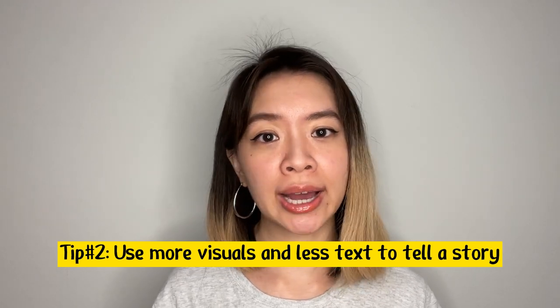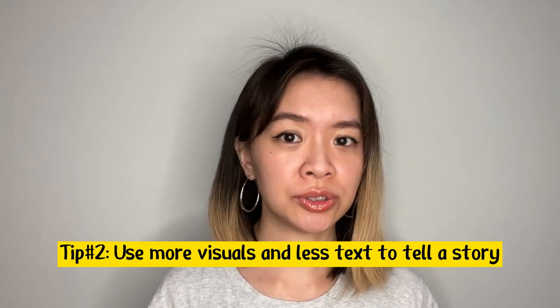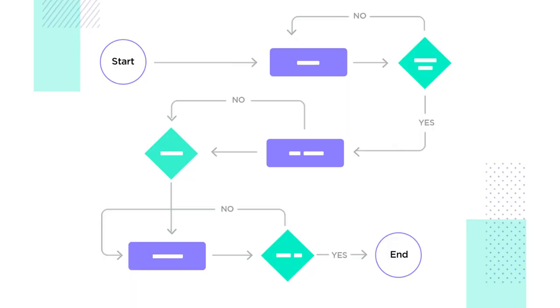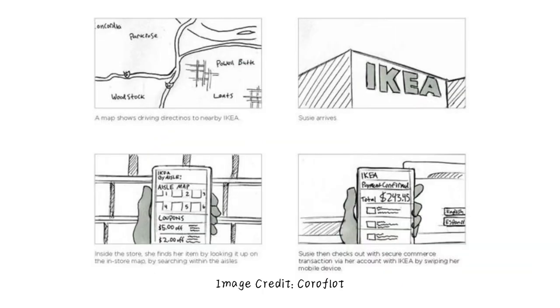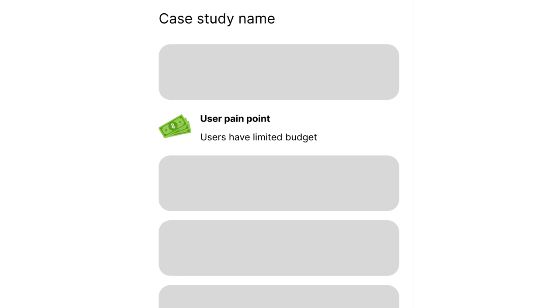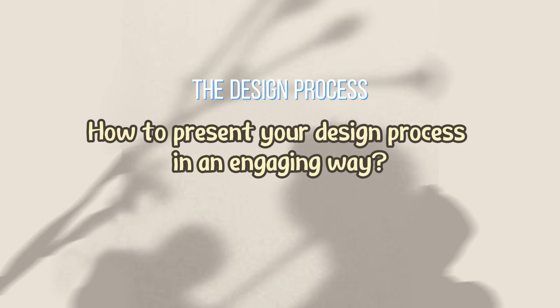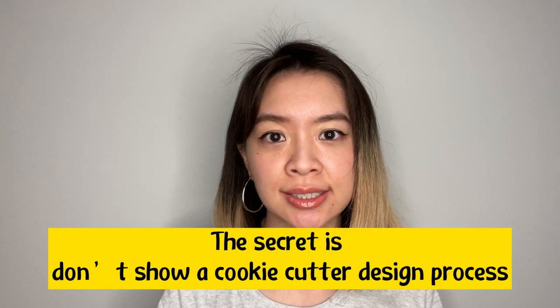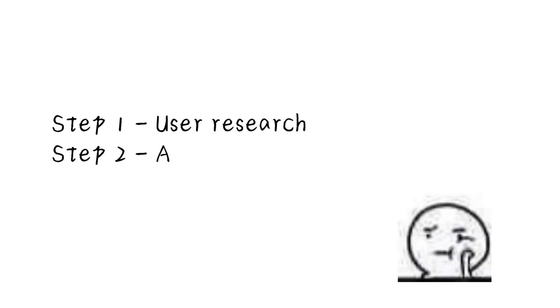Since audiences won't be able to read through everything and are likely to pay more attention to visuals, explore using more visuals in your case study. For example, instead of presenting a detailed text description of a user flow, use a storyboard to tell the user journey in a more engaging way. If you want to present user pain points, add indicative illustrations rather than just text descriptions — reading illustrations is easier than reading text. Think about how to be creative and transform text into compelling visuals and diagrams that tell a good story.